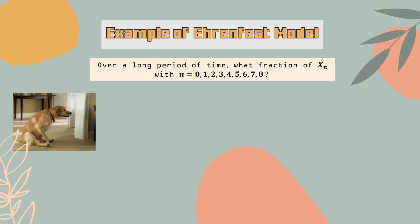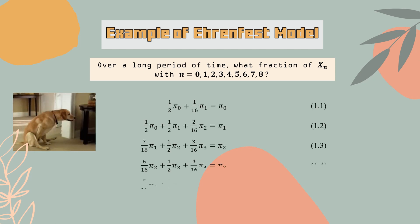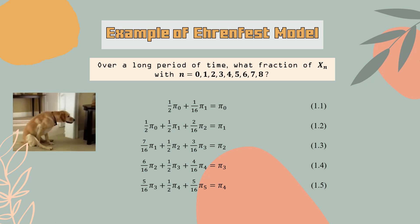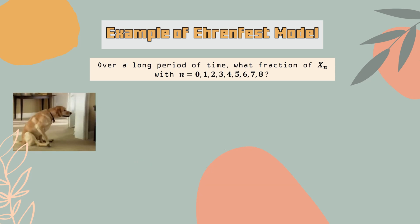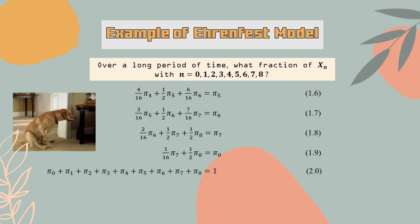Next, we want to figure out the fraction of X_n over a long period of time. Based on the matrix P, the equations determining the limiting distribution are set up. We solve these equations simultaneously and obtain the result.